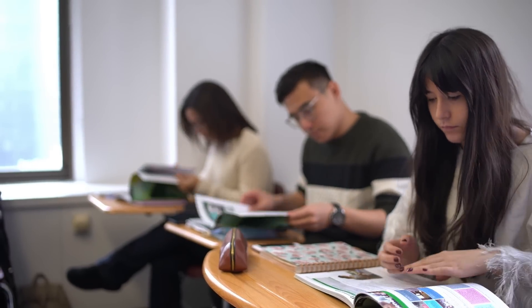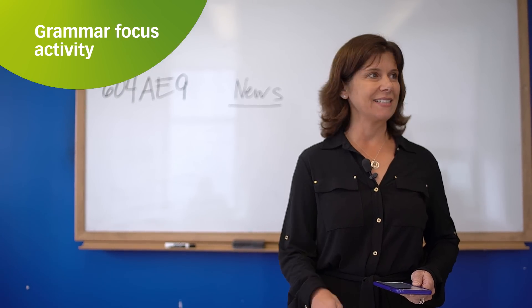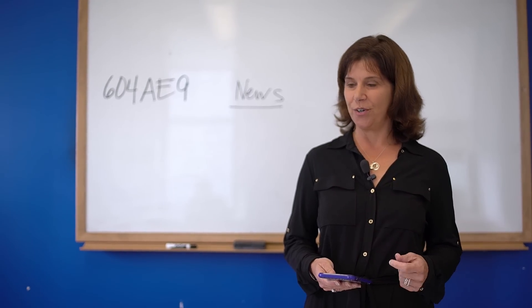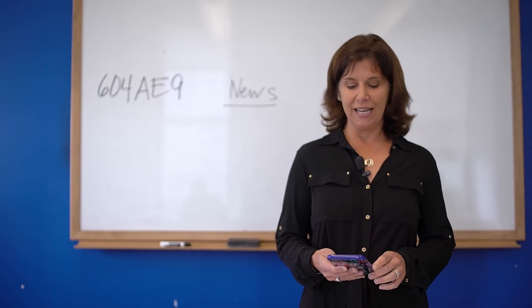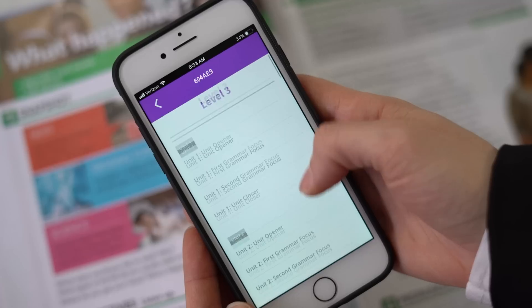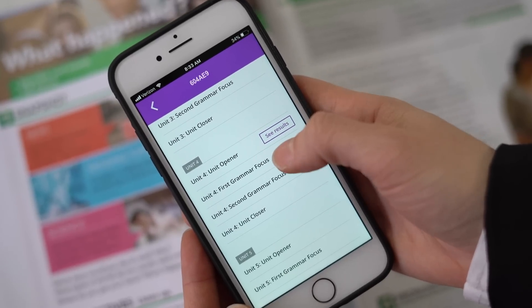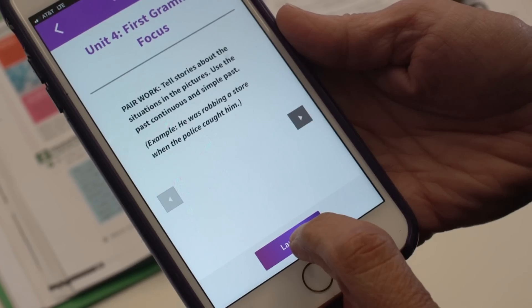Now that the class has studied the simple past and past continuous, the teacher moves to a speaking practice activity: 'We're going to pull out our phones, and you're going to look at some pictures and describe what happened in them.' Next up is the First Grammar Focus activity, which is simple to set up — scroll down to the appropriate unit, select First Grammar Focus, and press Launch.